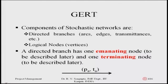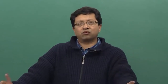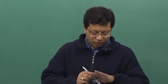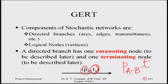A directed branch has one emanating node and one terminating node. That particular arc or directed branch carries two sets of information: the probability P_AB, which is the probability of traversing from activity A to activity B, and the time T_AB, which is the time taken to traverse from job A to job B.